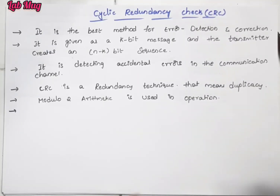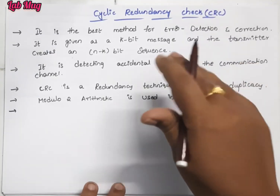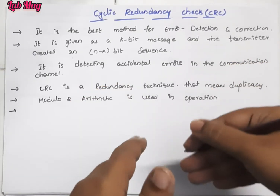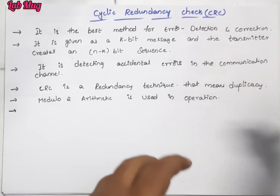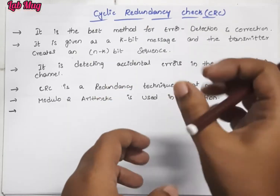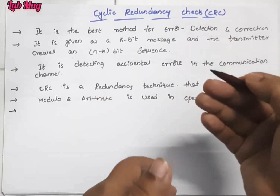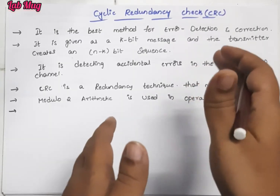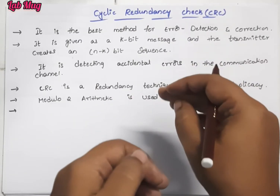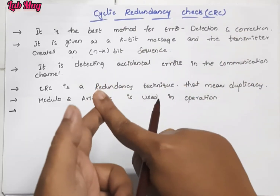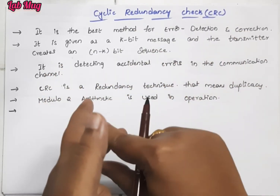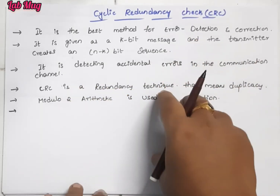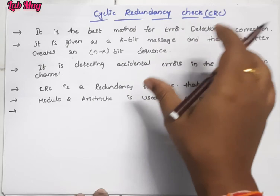Hi everyone. I am going to check Cyclic Redundancy. In Computer Networking, first we will do data transfer. We will detect errors using different procedures. First of all, we will do single bit and multi-bit. We will do certain procedures. The third procedure is the checksum procedure, and the fourth one is the Cyclic Redundancy Checker.